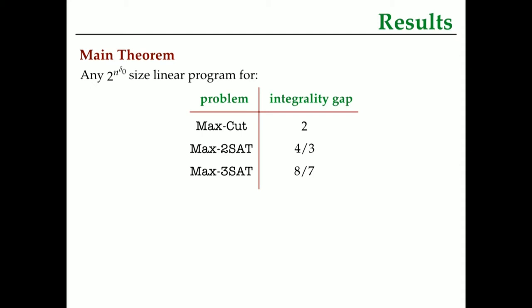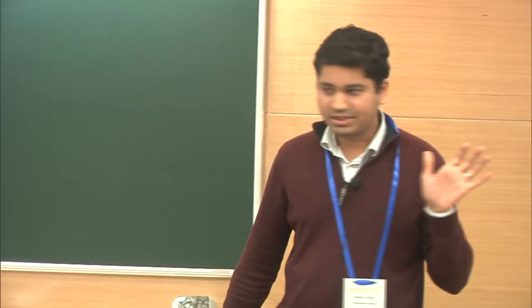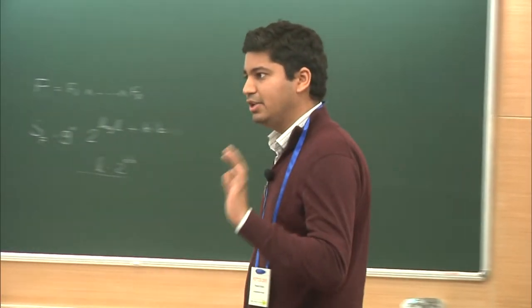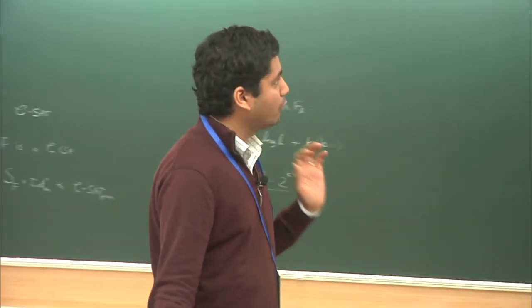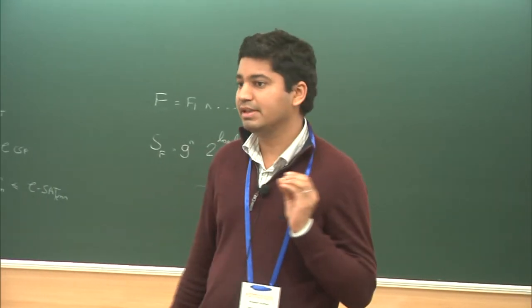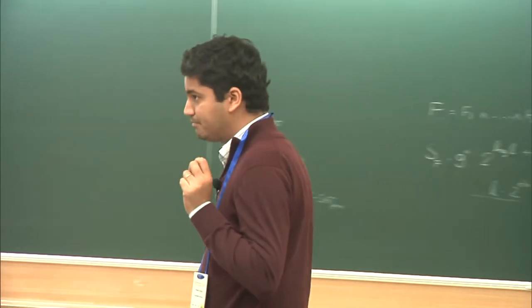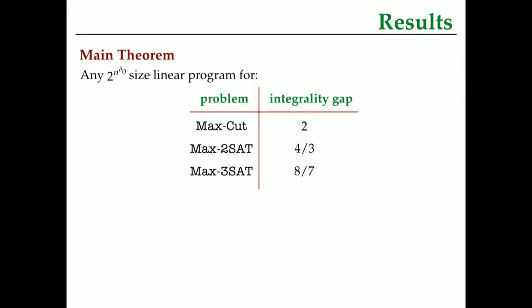The main result of this talk is going to be a lower bound on linear programming relaxations. Today I'm going to show you that there is some fixed constant delta naught — think of it like 0.0000001 — such that if you write a 2 to the n to the delta naught size LP relaxation, then such an LP relaxation has the following integrality gaps. If you want to solve the max cut problem with such an LP, the integrality gap of any 2 to the n to the delta naught size relaxation would be at least 2. Similarly, max 2-SAT the number would be 4/3, max 3-SAT the number would be 8/7, and so on.